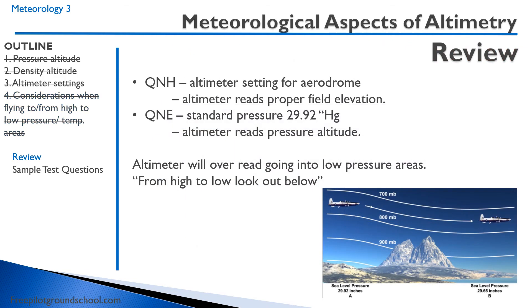QNH is the altimeter setting for the aerodrome, where the altimeter reads the proper field elevation. QNE is the standard pressure of 29.92 inches of mercury, where the altimeter reads the pressure altitude. Be very careful when going from high-pressure or high-temperature areas to low-pressure or low-temperature areas — from high to low, look out below.